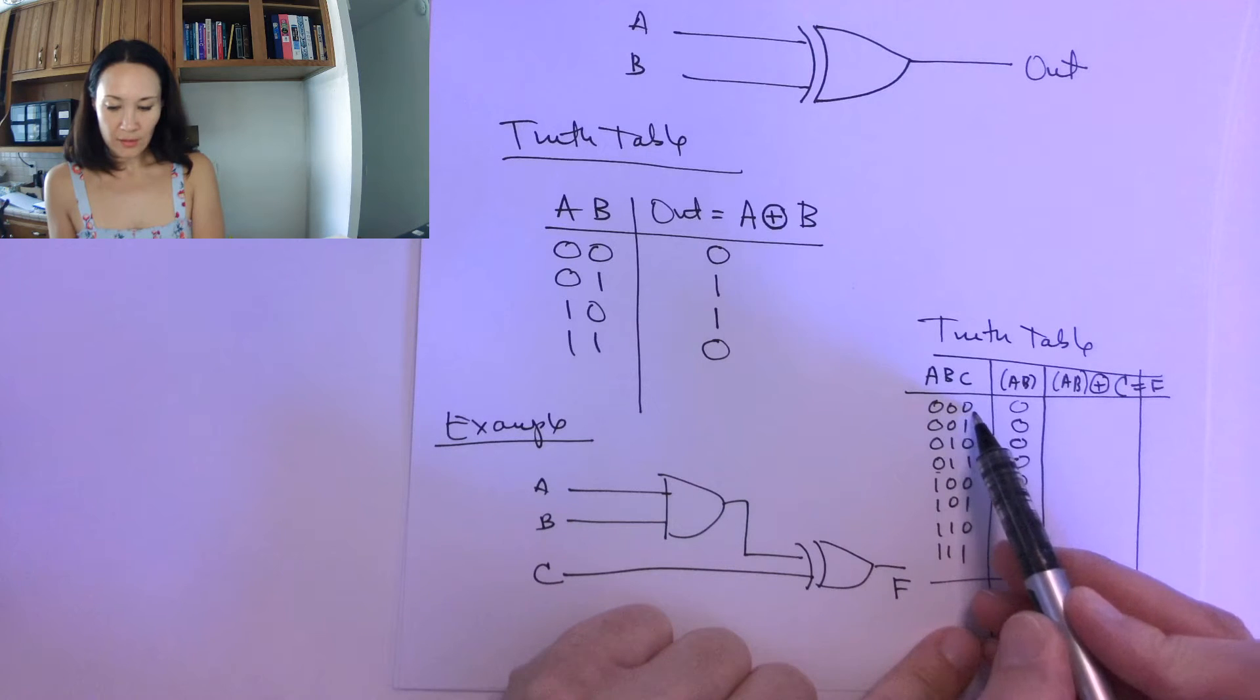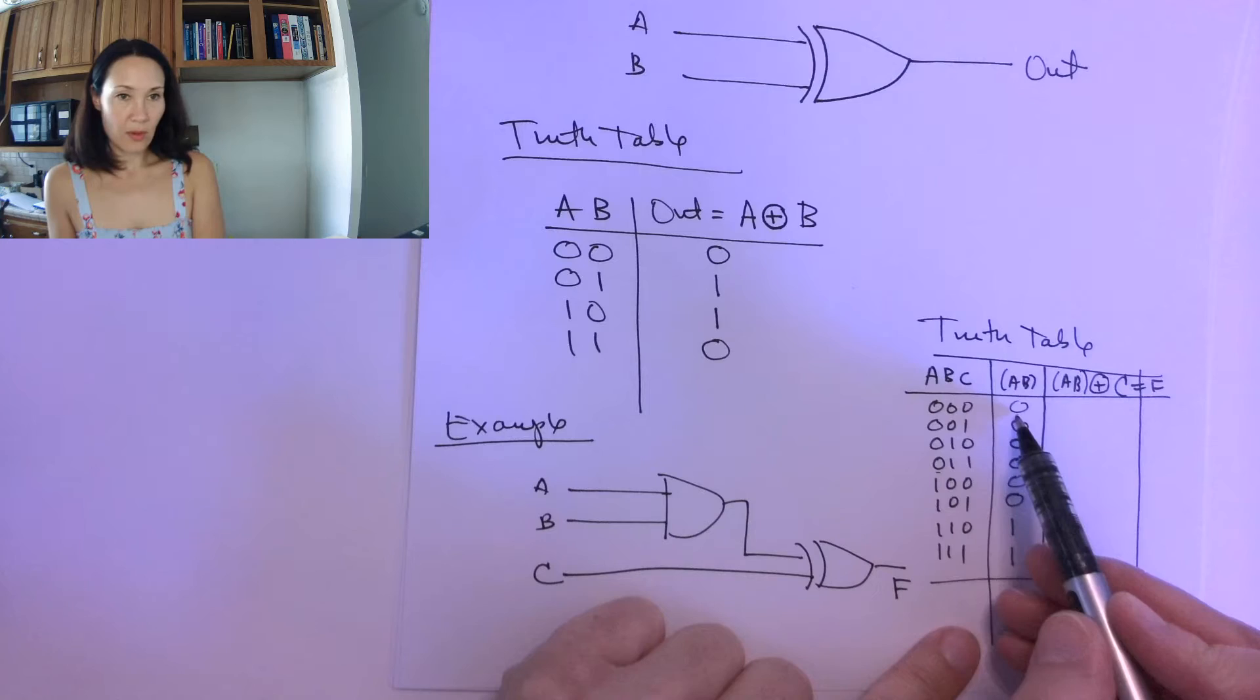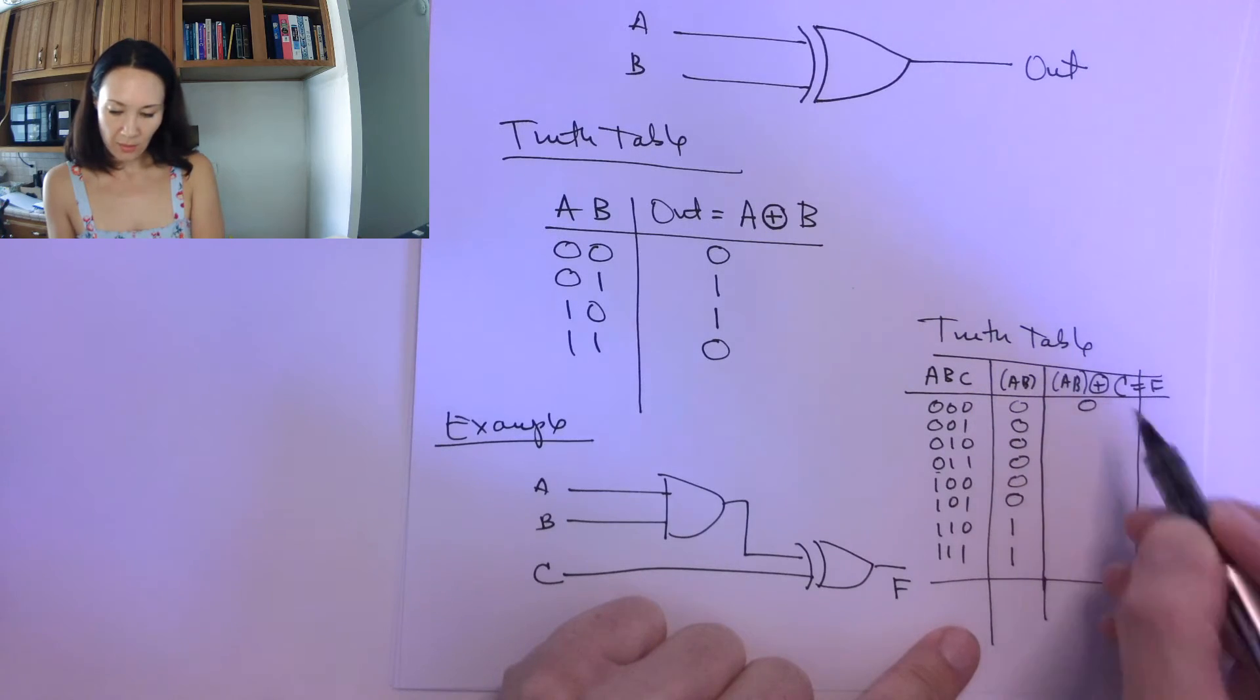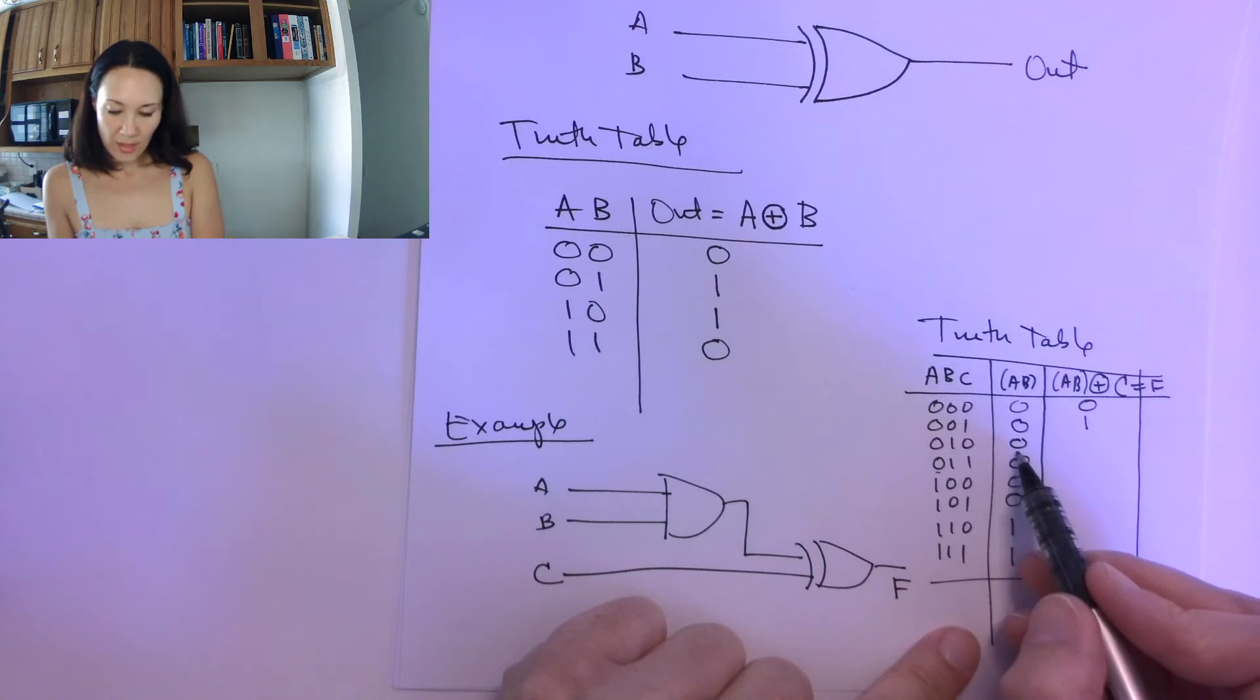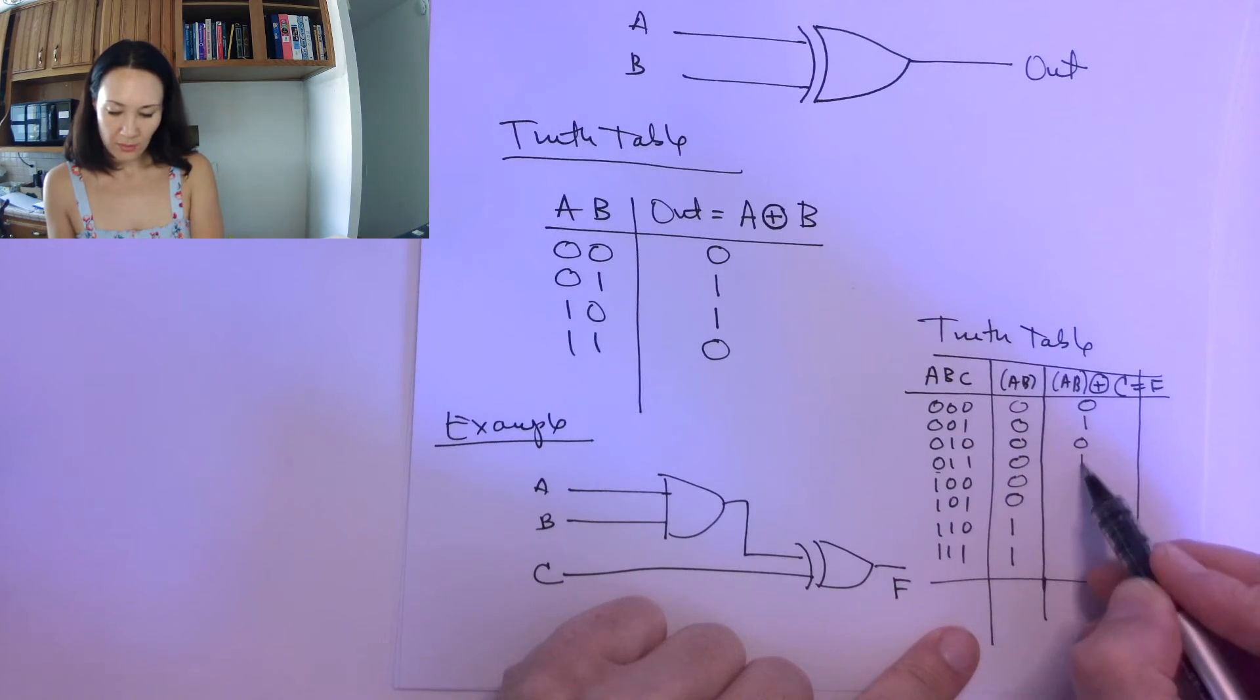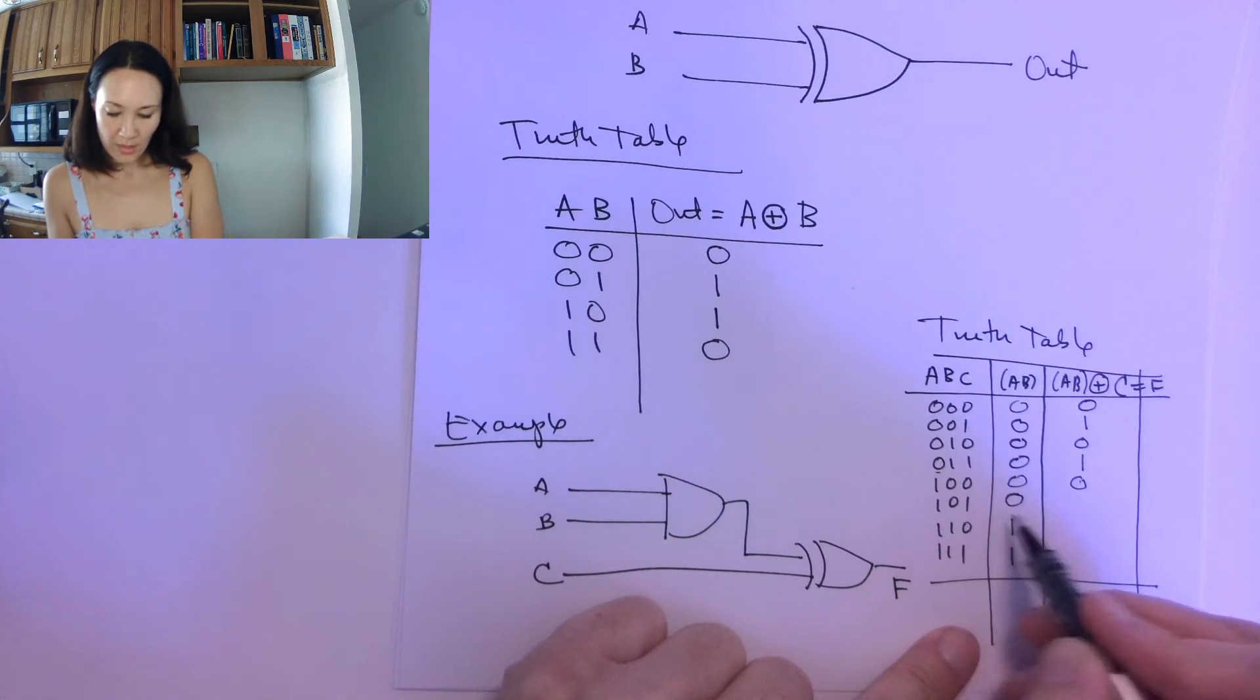So this first row is 0 XOR 0, so that gives me a 0. 0 XOR 1 gives me a 1, 0 XOR 0 gives me a 0, 0 XOR 1 gives me a 1, 0 XOR 0 gives me a 0, 0 XOR 1 gives me a 1, and 1 XOR 0 gives me a 1, and 1 XOR 1 gives me a 0.